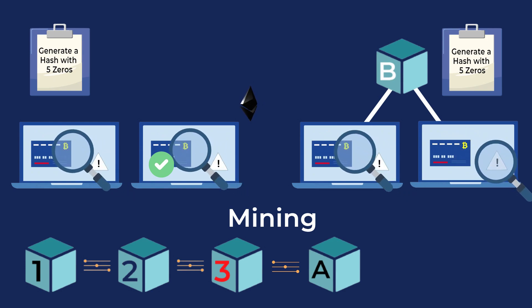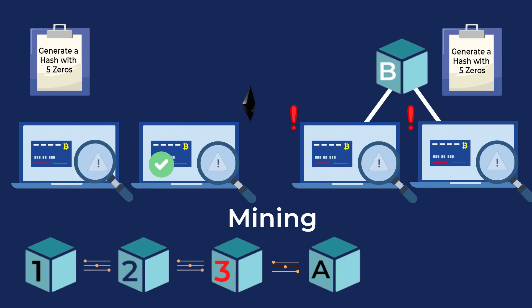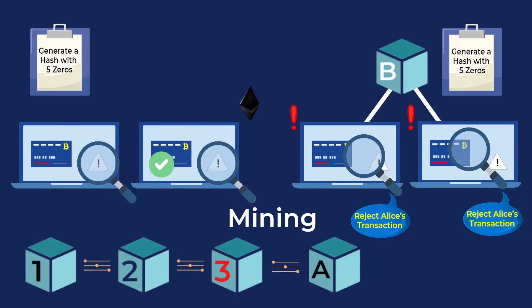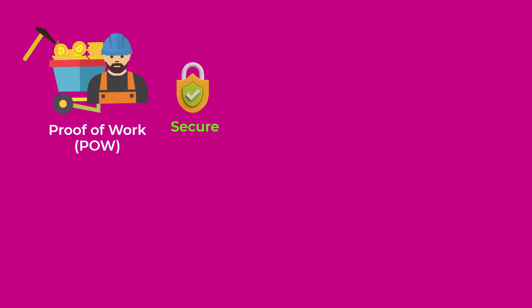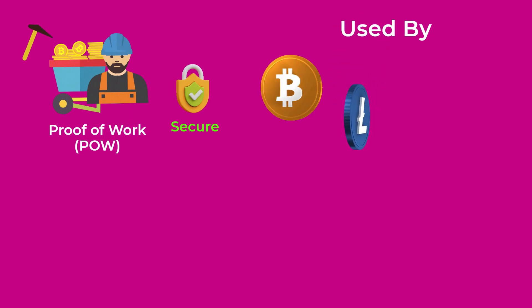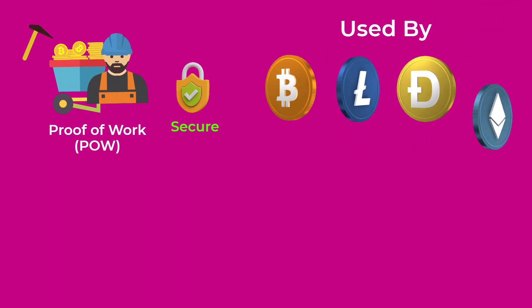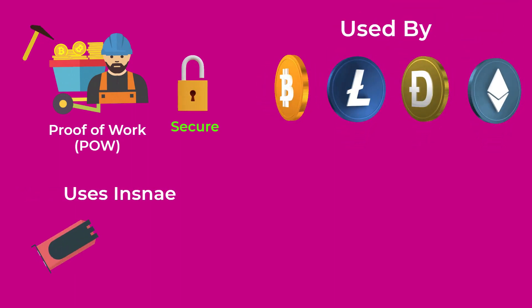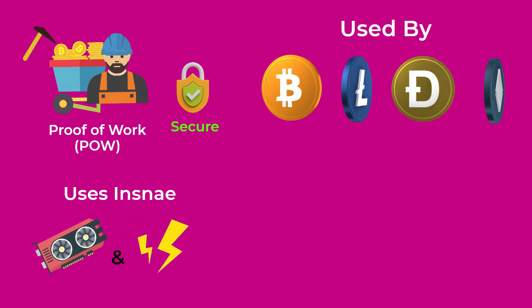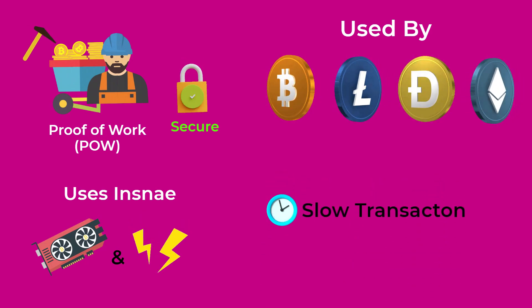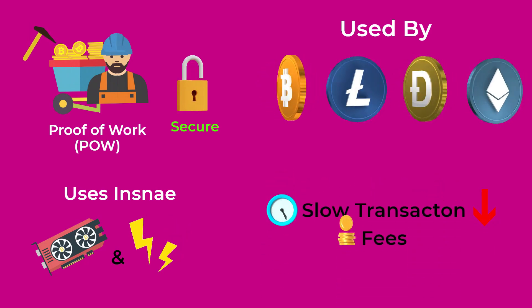Let's say the network confirmed block A first. When the computers try to validate block B, they reject Alice's transaction and prevent Taylor from spending his money twice. This proof-of-work system is a very secure consensus mechanism used by a lot of cryptos today, like Bitcoin, Litecoin, Dogecoin, and Ethereum. However, it uses insane amounts of power and electricity to solve these complex mathematical problems, while also having considerably slow transactions and high transaction fees.